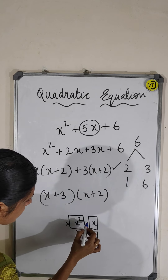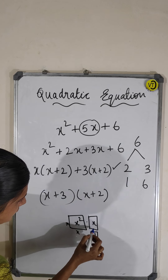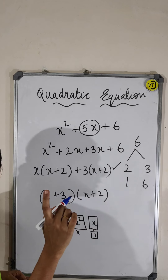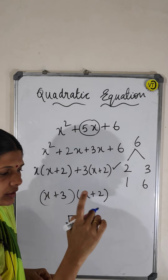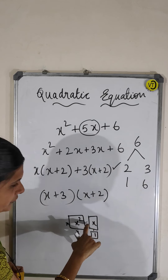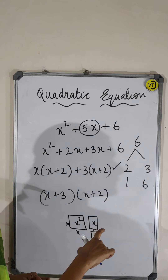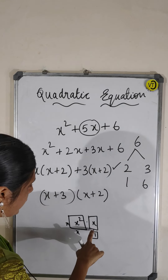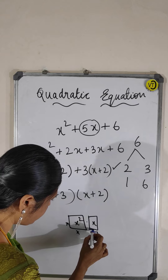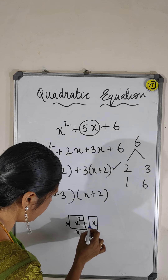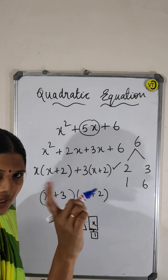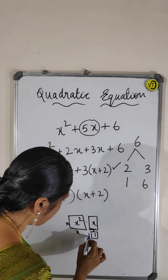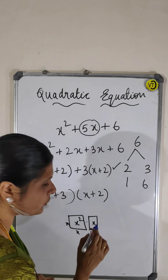So: x times x is x², x times 1 is x, and 1 times 1 is 1. I am going to use these three types of cards: the x² card, the x card, and the unity card.